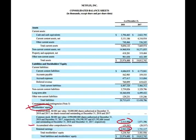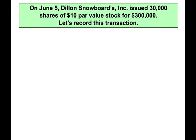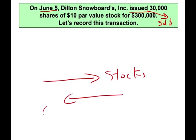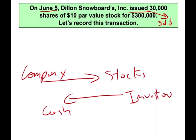Let's take a look at a few transactions in common stock to see how common stock comes to life and how it is presented on the financial statements. On June 5th, Dylan Inc. issued — meaning sold — 30,000 shares. The corporation sells stocks and receives cash in return: the investor gets the stocks and the company gets the cash. The par value for this stock is $10 and they received $300,000.